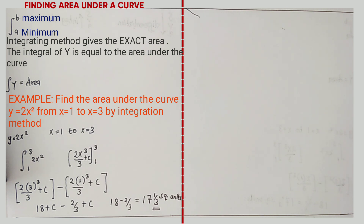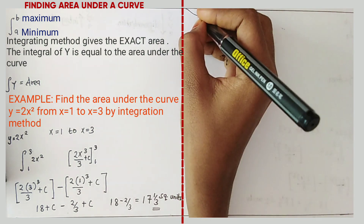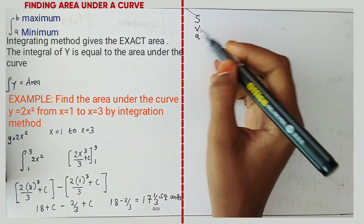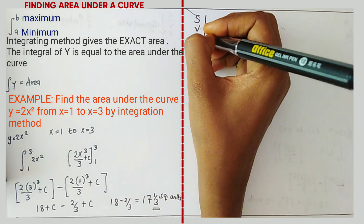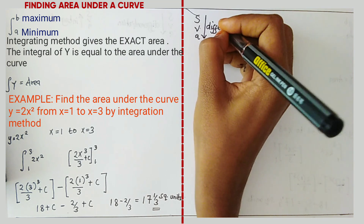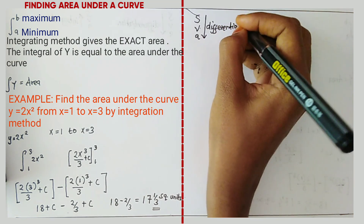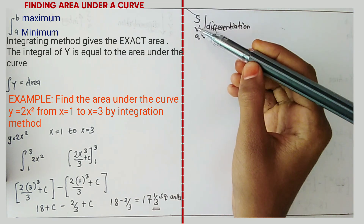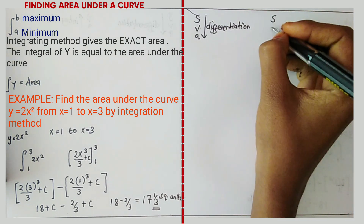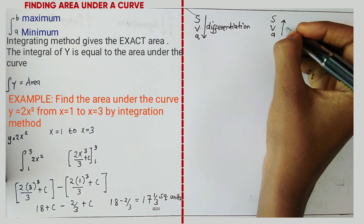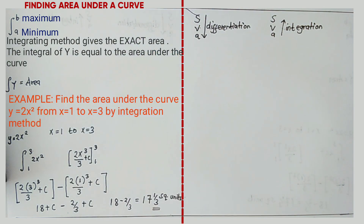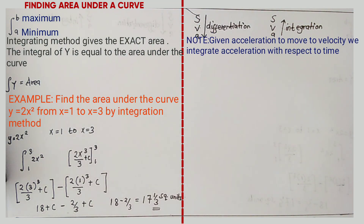The next concept is application of integration to velocity and distance. We said S represents distance, V velocity, and A acceleration. In differentiation we were going downwards: differentiating dS/dt gives velocity, and differentiating velocity gives acceleration. For integration it is the opposite — you go upwards: given acceleration, you integrate with respect to time to move to velocity.